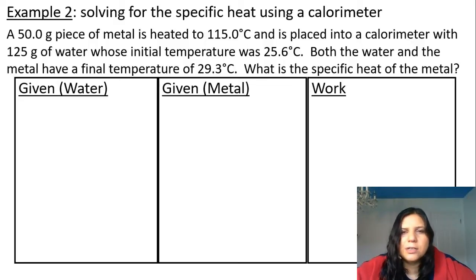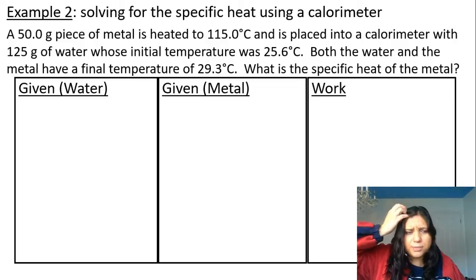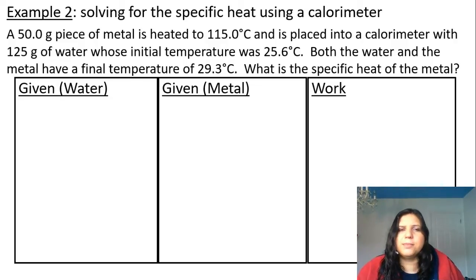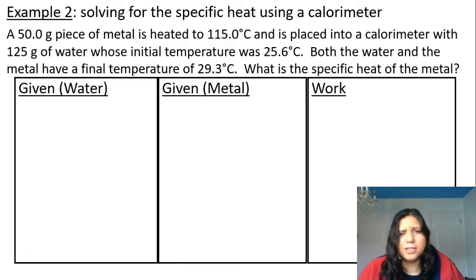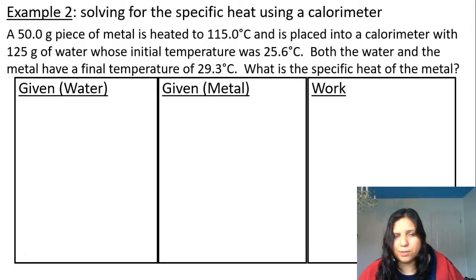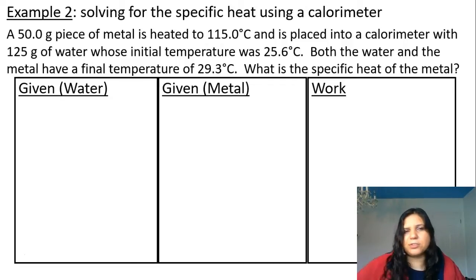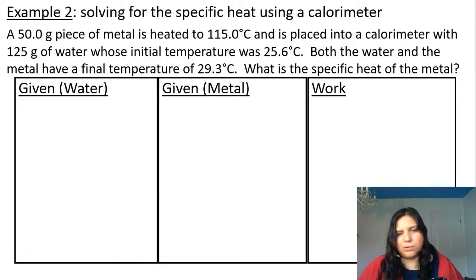Example two: we're going to find the specific heat of a metal using a calorimeter — you'll do this in lab. A 50 gram piece of metal is heated to 115 degrees Celsius and placed in a calorimeter with 125 grams of water at an initial temperature of 25.6 degrees Celsius. Both the water and the metal reach a final temperature of 29.3 degrees Celsius. Note that both share the same final temperature because they reach thermal equilibrium.